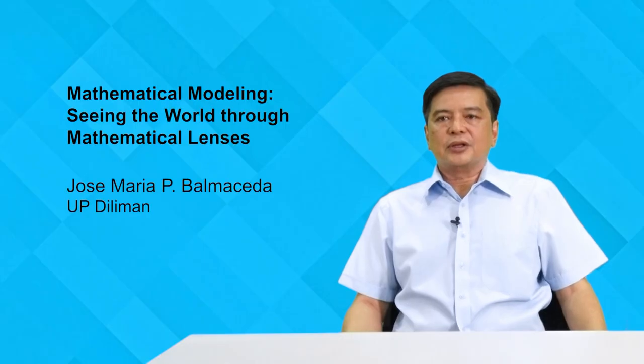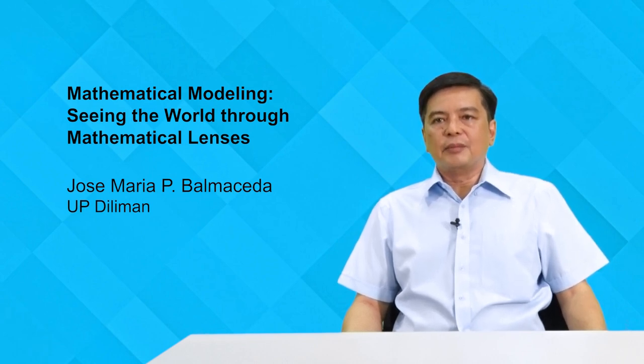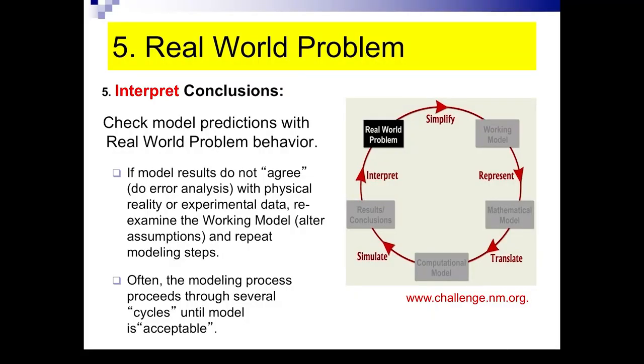Now, once you've understood the results of your computational programs and solutions, you want to check whether your model really validates or confirms what you expect in the real world problem. Hopefully, the model will predict the real world problem's behavior. And this is a very hard part of the modeling process. Because one, your results may not agree with what you've observed from experimental data. On the other hand, your results may seem to agree. But the challenge is to determine why this is so. It could just be a coincidence. And this is where a lot of statistical and mathematical error analysis is performed.